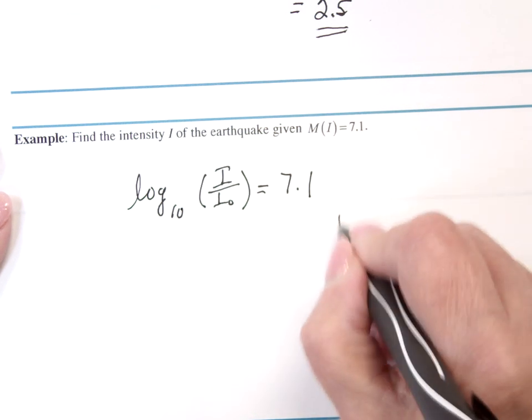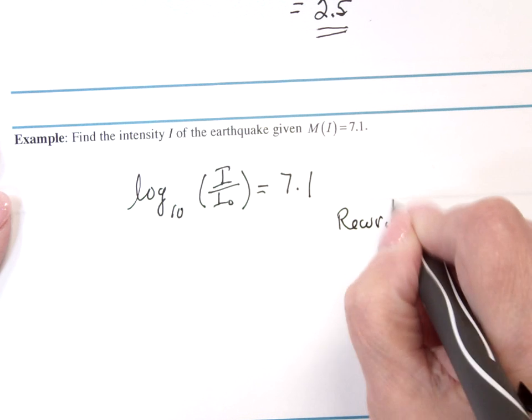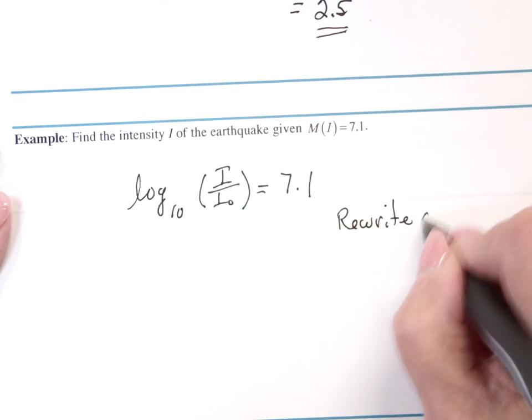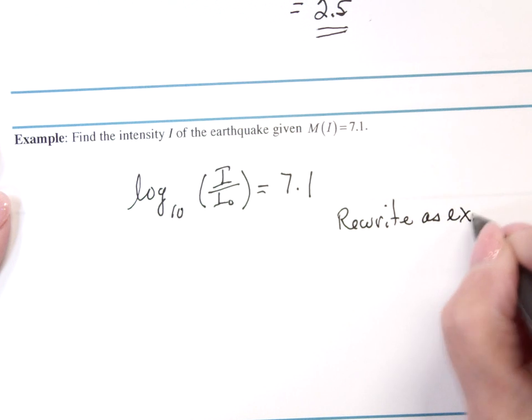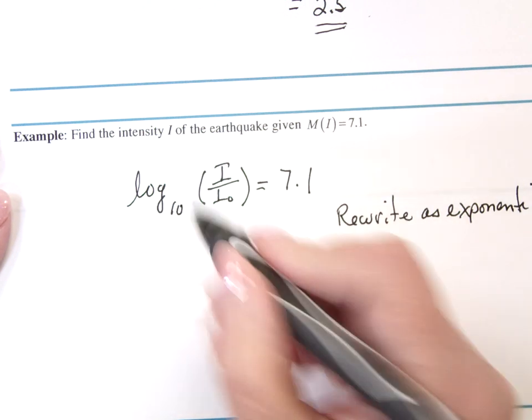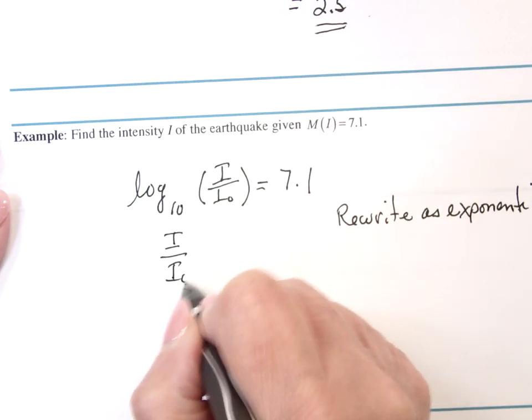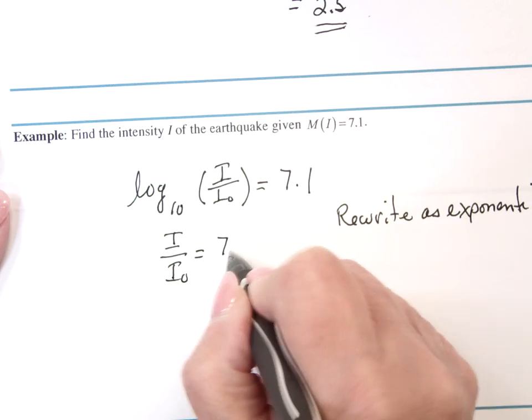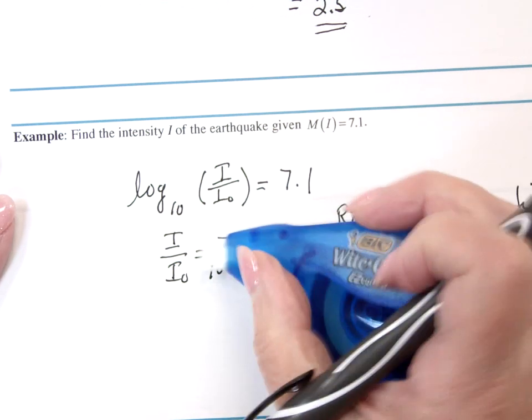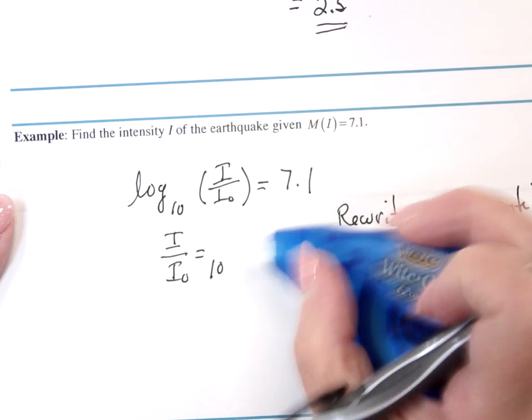And this, now, I rewrite, which is what you do quite often with logs, as an exponential. So this says that I divided by I sub zero is 7.1, 10 to the 7.1. Let me do this right.